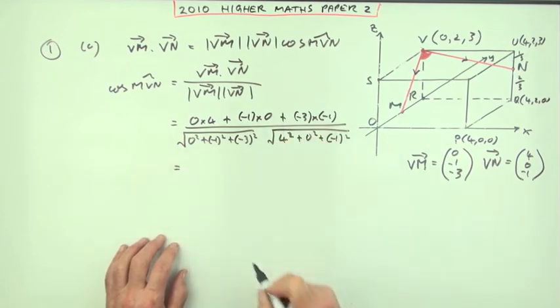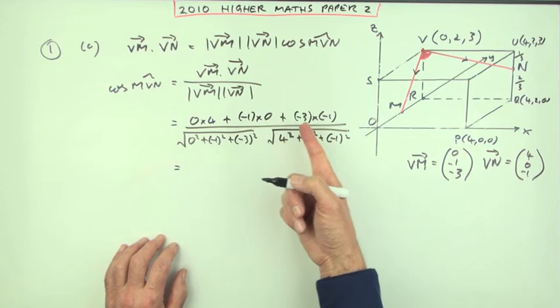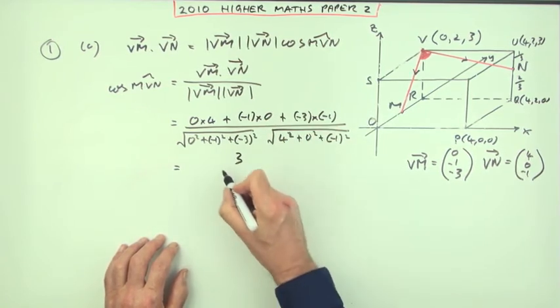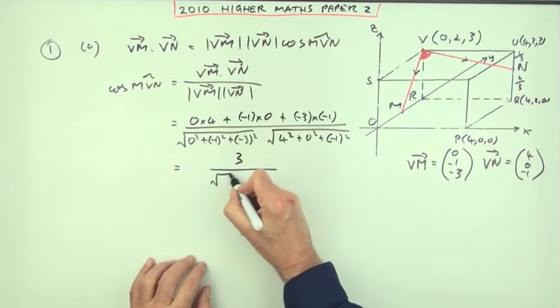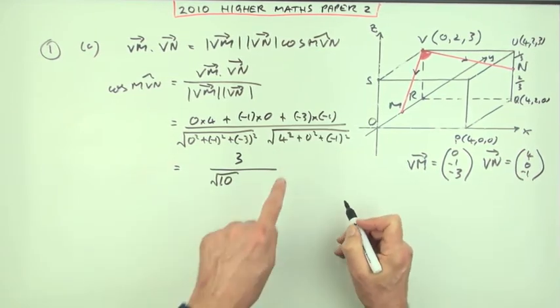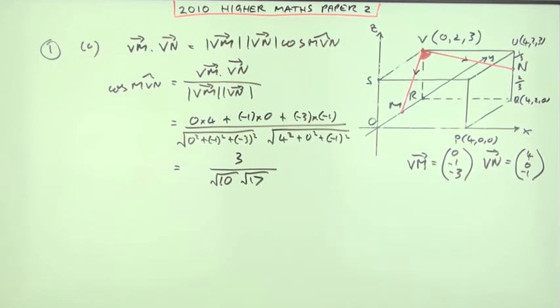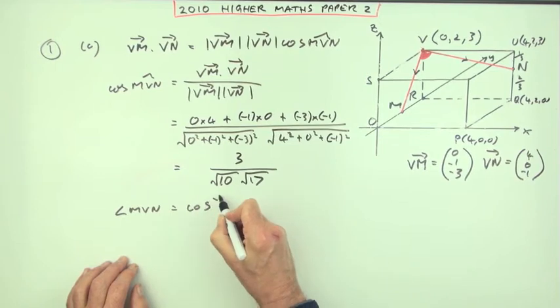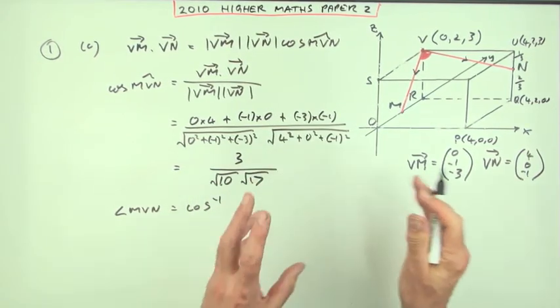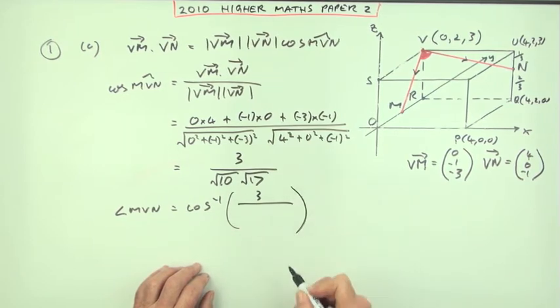I'll just tidy up to get the three parts. Notice this top part only comes to three, because there's a zero times a zero times. So the top of it's three. This part, you've got a nine and a one, which is ten, so that's root ten. And this one, you've got a 16 and a one, that's 17. So the angle you're looking for, angle MVN, will be the inverse cos of this thing. Now don't work that out as a decimal and pop that in. Just do inverse cos of it. In fact, you don't even need to type in root ten times root 17, because the product of the square roots will simply be the square root of the product.